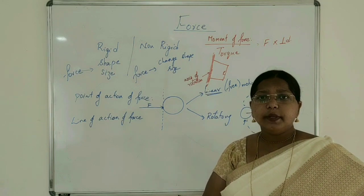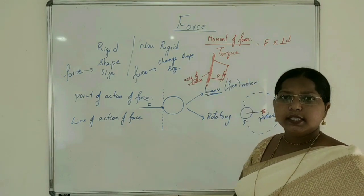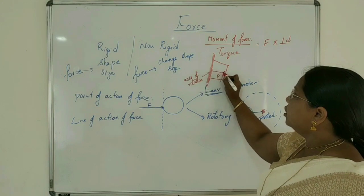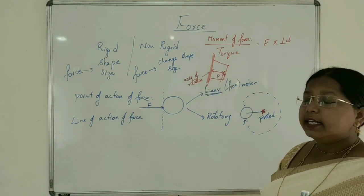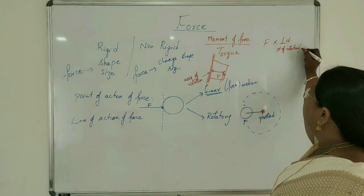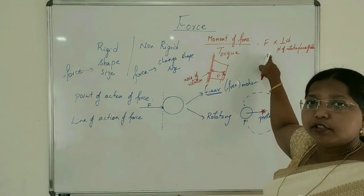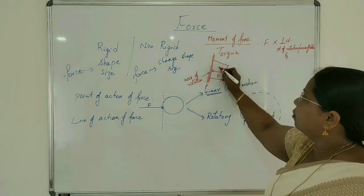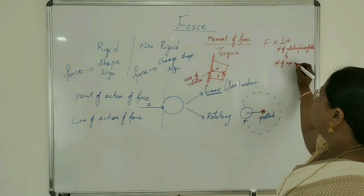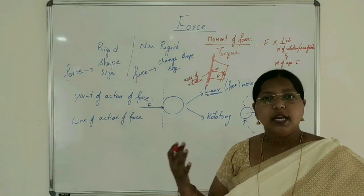The door is turning — to open it, I apply some force at a point on the door. The perpendicular distance is the distance between the axis of rotation and the point of application of force. So the moment of force equals force into perpendicular distance, where perpendicular distance is measured from the axis of rotation to the point where the force is applied.